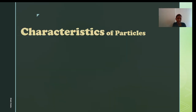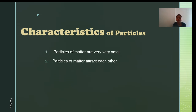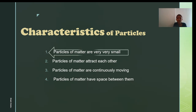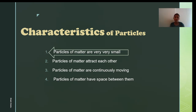The characteristics of particles of matter are: first, particles of matter are very very small; second, particles of matter attract each other; third, particles of matter are continuously moving; and fourth, particles of matter have space between them. These are the properties of particles because matter is made up of particles. The particles in any object are so small we cannot even see them with a microscope.